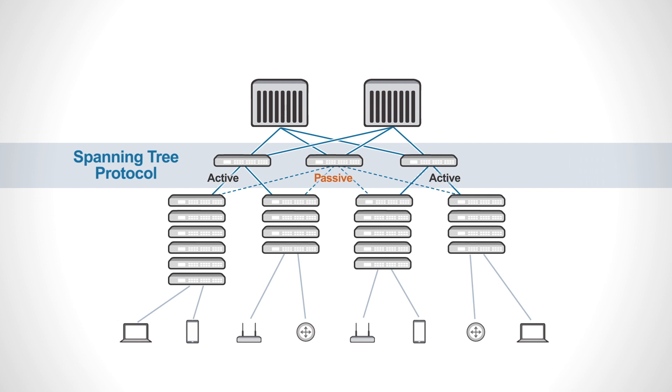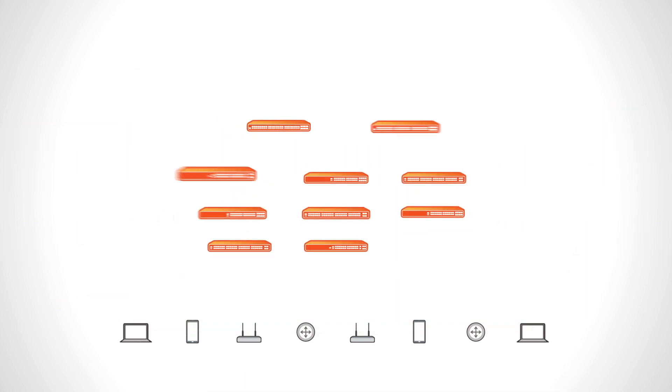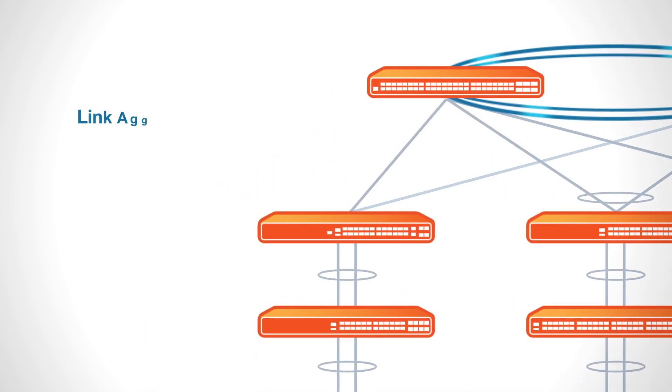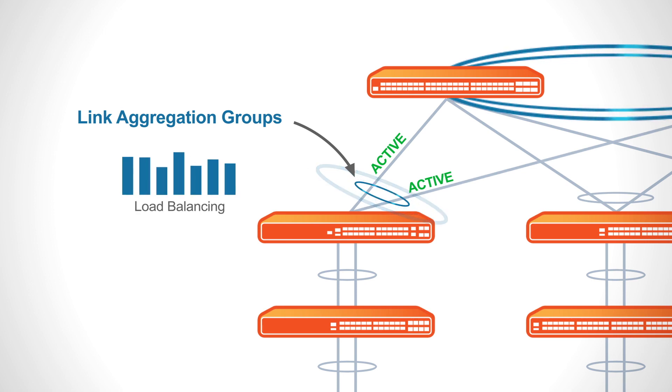Eliminating the spanning tree protocol eliminates the waste of active passive redundant paths. Link aggregation groups form automatically across redundant paths to protect against link failure while at the same time load balancing to optimize performance.